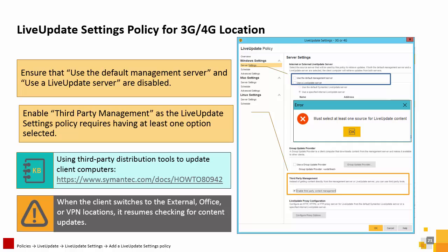Symantec Endpoint Protection supports the use of third-party distribution tools to update both managed and unmanaged clients that run on Windows operating systems. Mac and Linux clients can only receive content updates from internal or external Live Update servers. However, in this example, enabling third-party distribution turns off client updates until the clients switch to the external, office, or VPN locations. At that point, it resumes checking for content updates.